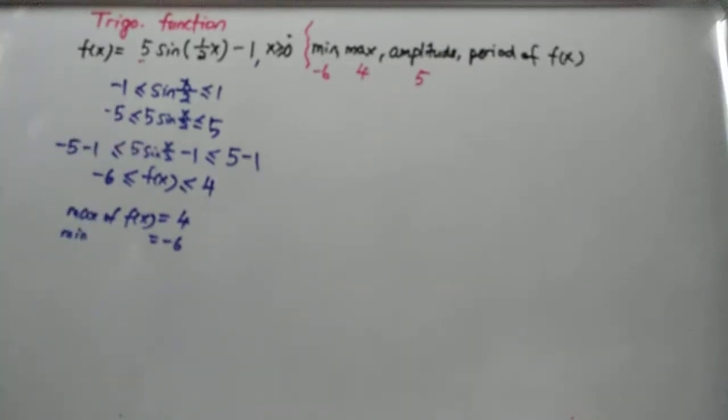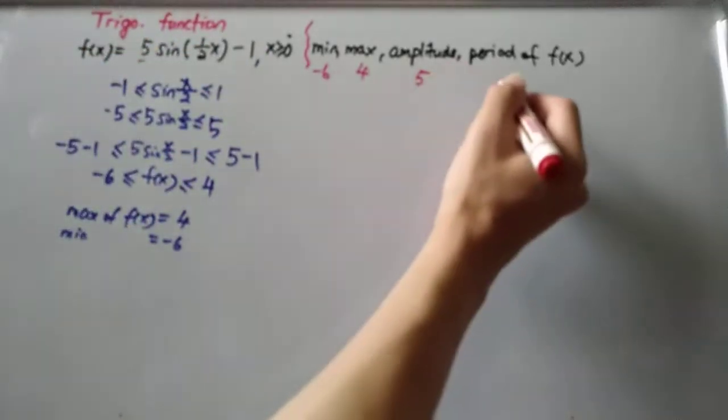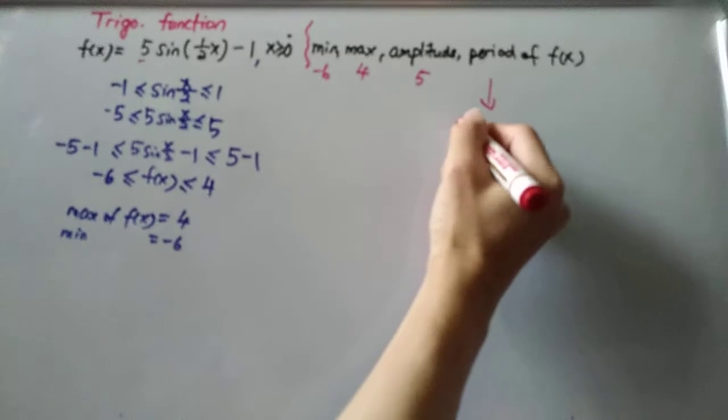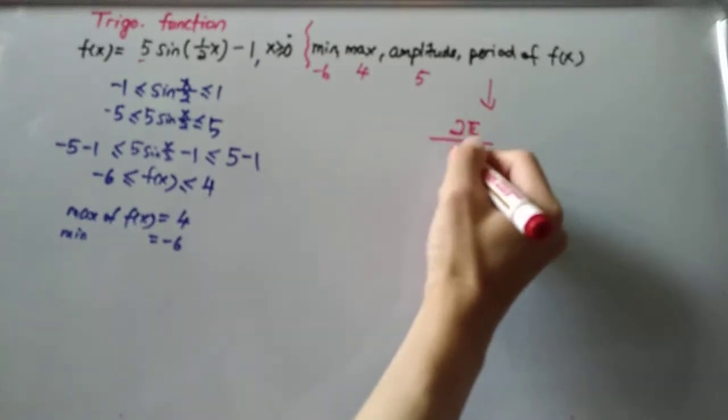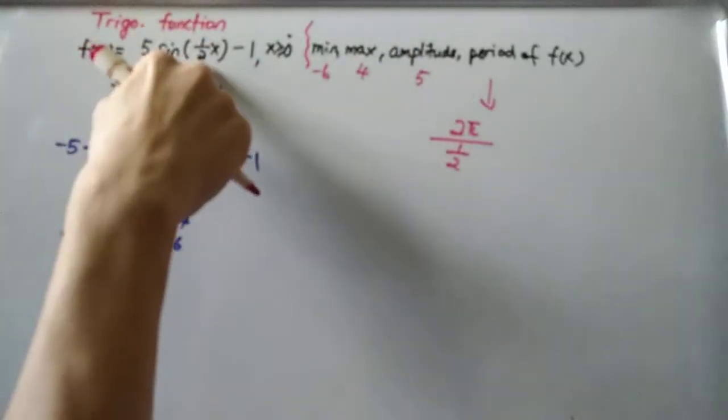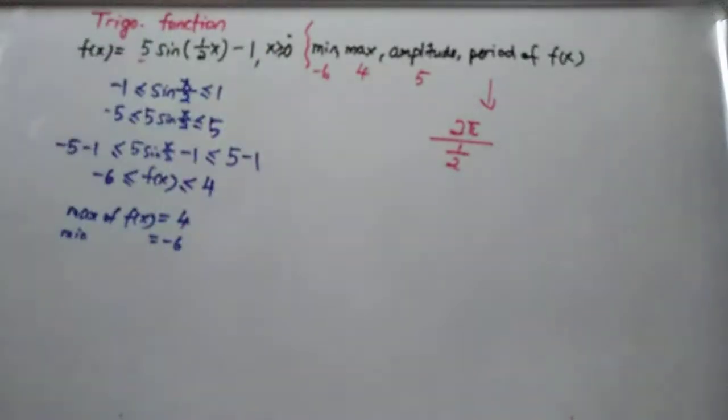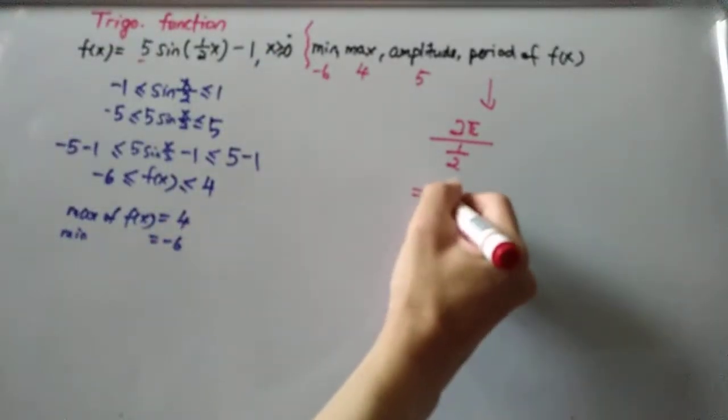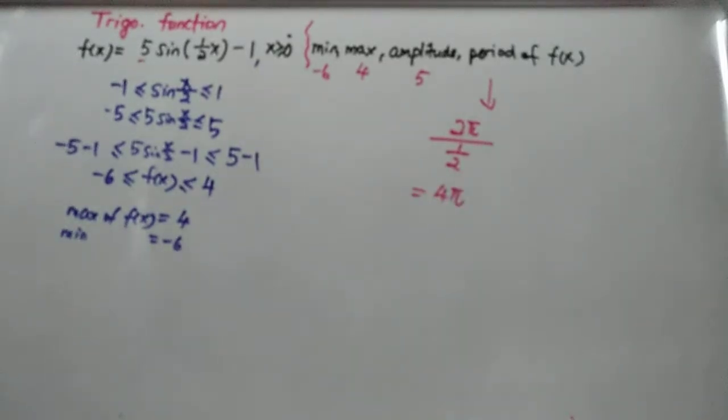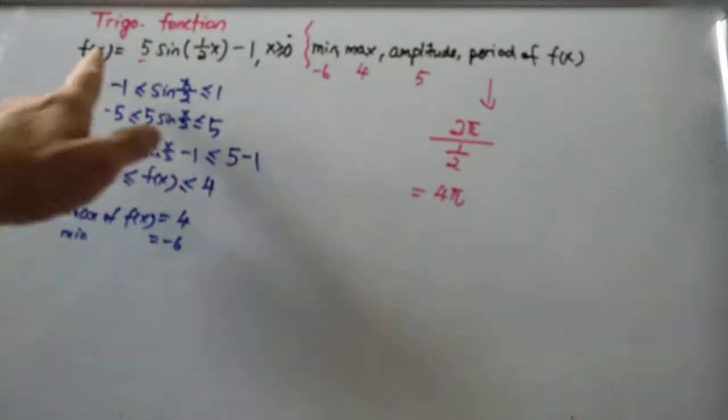The period is 2π, and this is sin(x/2), so the period will be 2π over the coefficient of the angle here, which is 1/2. So if this is the case, you get 4π. So the period for this function is 4π, meaning every 4π this sine function will repeat by itself.